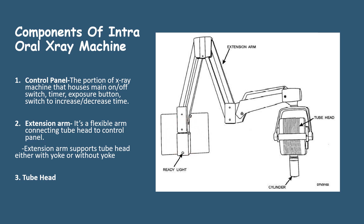The extension arm is a flexible arm connecting the tube head to the control panel. It supports the tube head either with a yoke or without a yoke. This is the extension arm and this is the yoke.